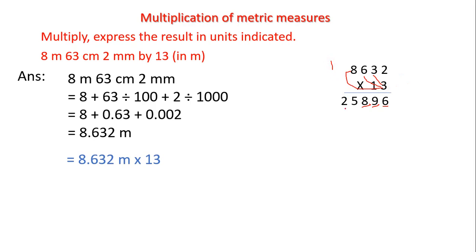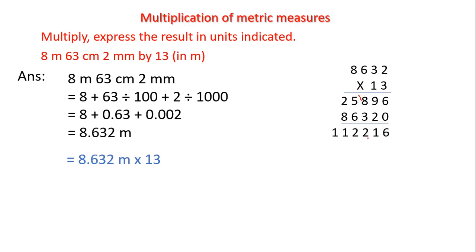Next we multiply by 1 in the tens place, so we write 0 in the ones place first. 1 times 2 is 2, 1 times 3 is 3, 1 times 6 is 6, 1 times 8 is 8. Adding the partial products: 6, then 9 plus 2 is 11 write 1 carry 1, then carry plus 8 is 9 plus 2 is 12 write 2 carry 1, then carry plus 5 is 6 plus 6 is 12 write 2 carry 1, then carry plus 2 is 3 plus 8 gives us the product 112216.